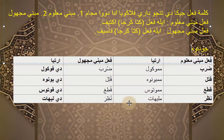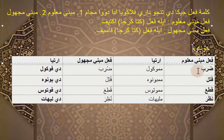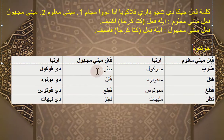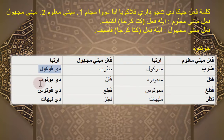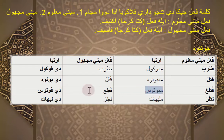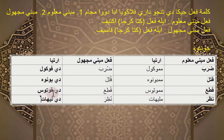Kalau dijadikan Mabni Majul: Zoroba menjadi Zuribah, Kotala menjadi Kutila, Kotoa menjadi Kuti'ah, Nazoro menjadi Nuziro. Artinya juga berubah: Zoroba memukul menjadi Zuribah dipukul, Kutila dibunuh, Kuti'ah diputus, Nuziro dilihat.